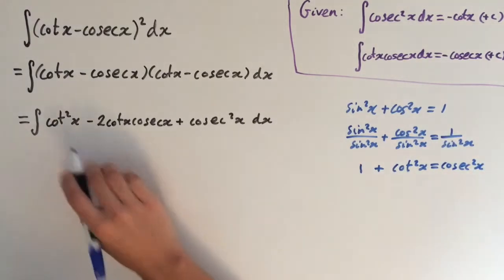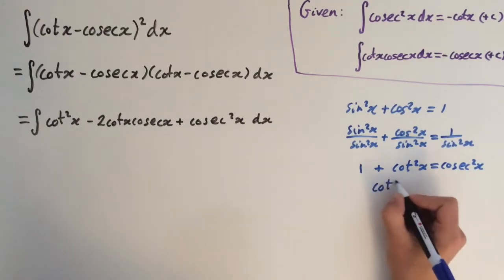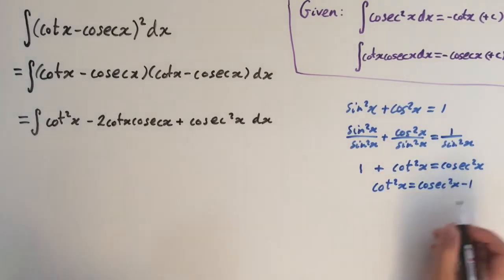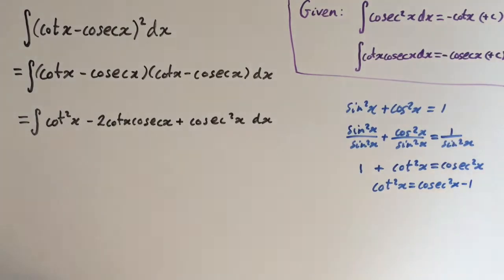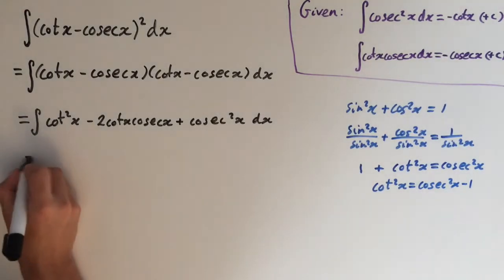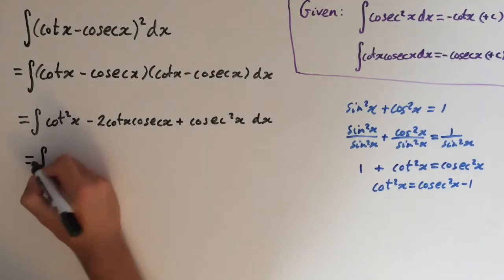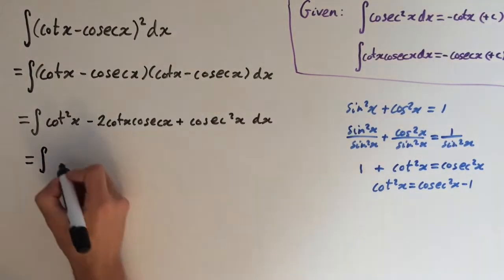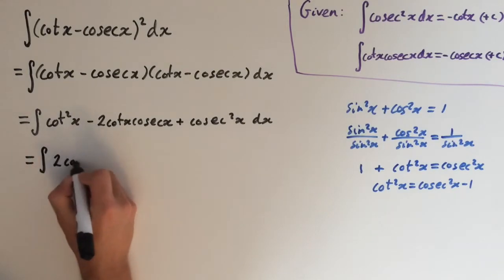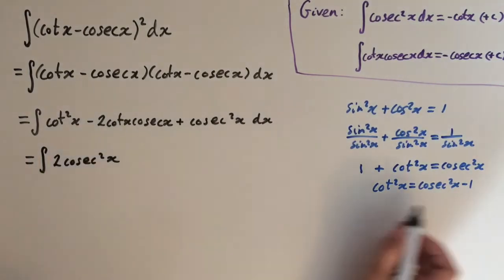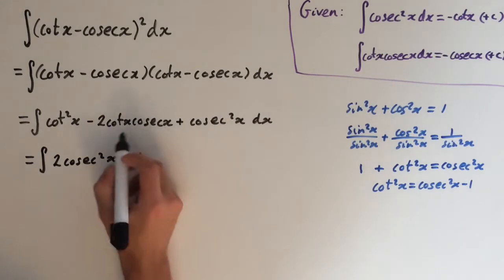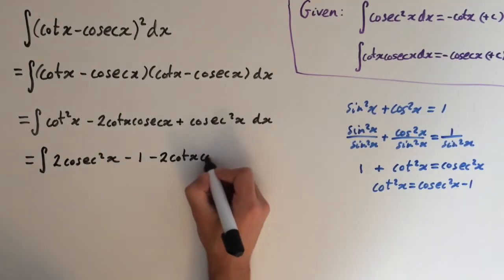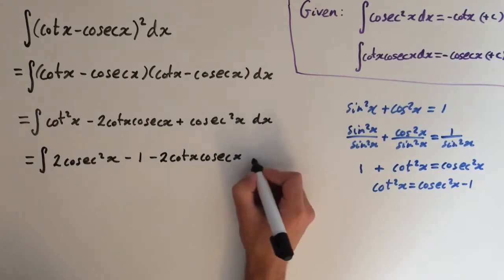Now we can rearrange this and substitute in. So cot squared of x equals cosec squared of x minus 1. Substituting this in, we've got a cot squared here and a cot squared here, so adding them together gives us 2 cosec squared of x minus 1, then minus 2 cot x cos x, dx.